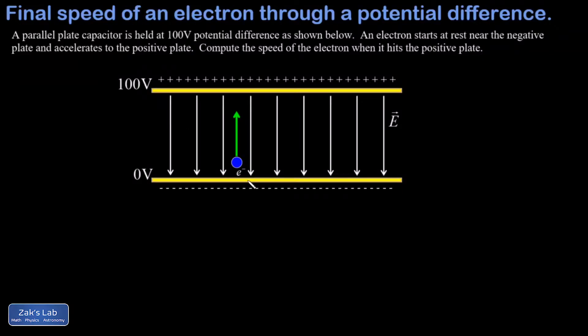In this example, we're looking for the final speed of an electron that's accelerating from the negative plate of a parallel plate capacitor to the positive plate through a known potential difference of 100 volts.